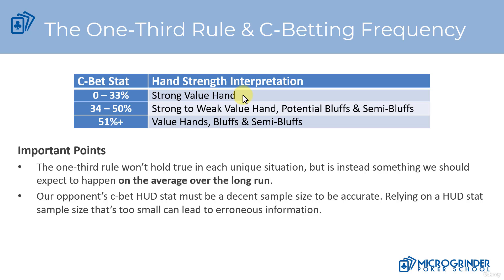If they hit the flop with a good hand, they're going to c-bet; if not, they're going to check. If somebody is c-betting 34% up to 50% of the time, that tells us that they're not only c-betting their strong value hands, but they're also going to be c-betting weaker value hands — so it could be a moderate strength value hand all the way down to a very weak thin value bet, and potentially some bluffs and semi-bluffs in there as well.